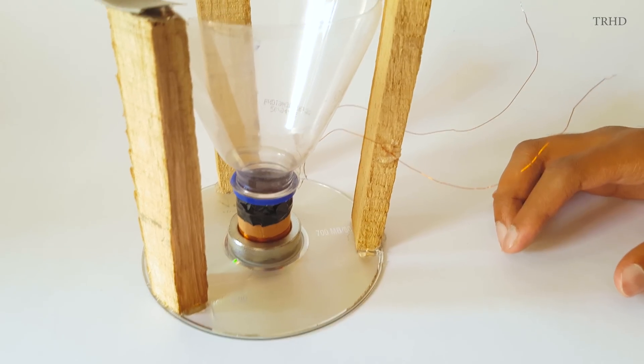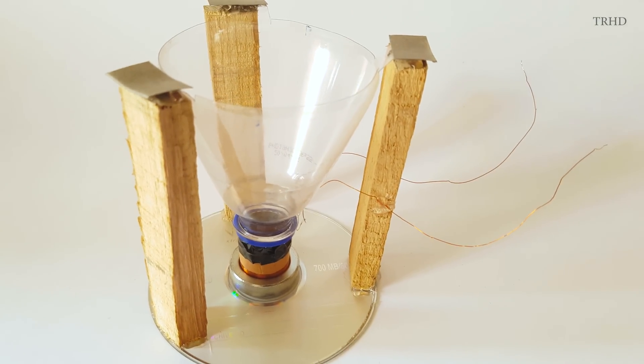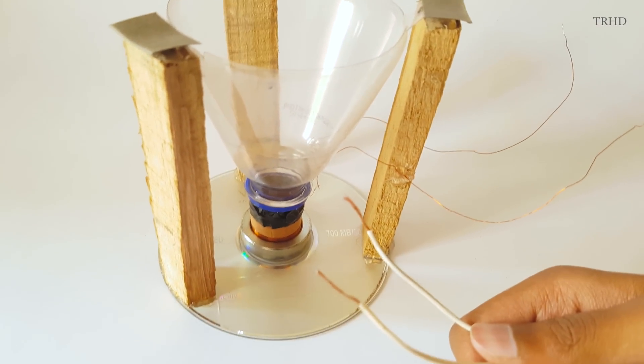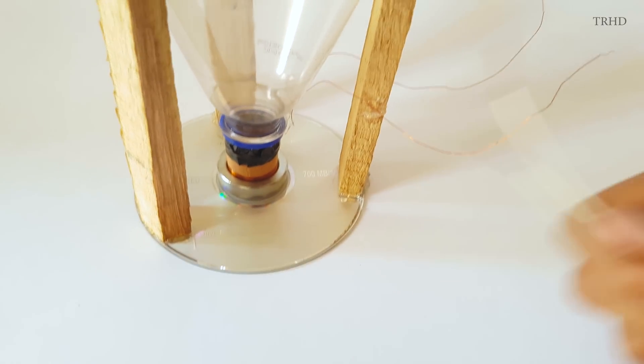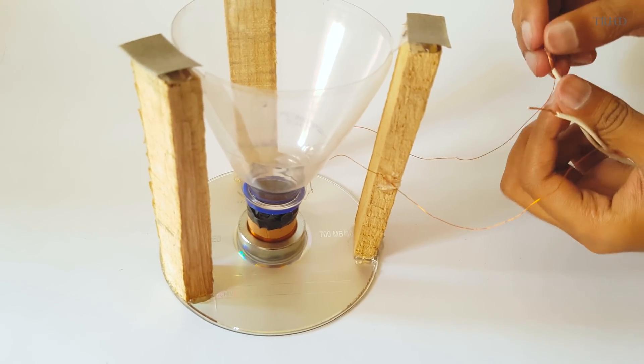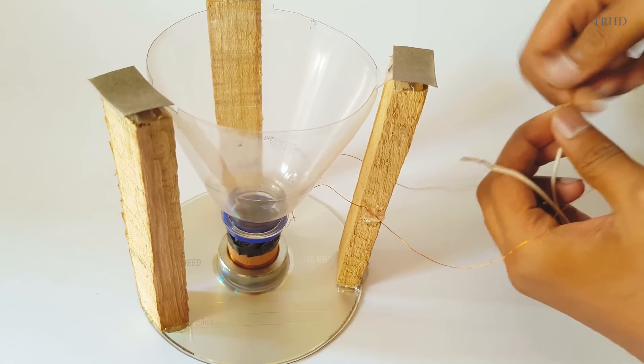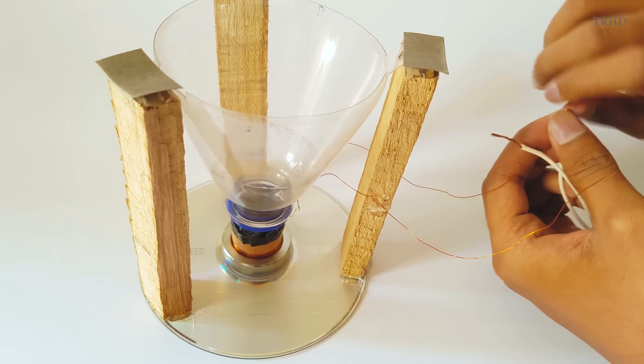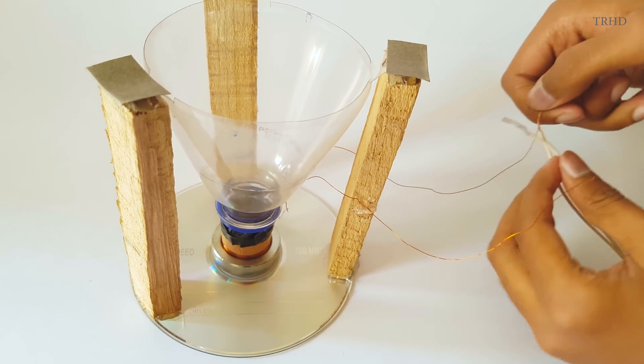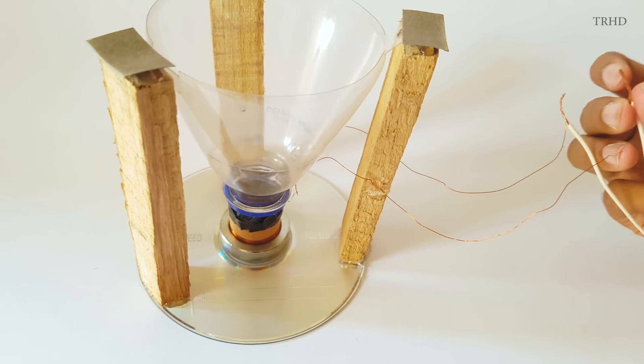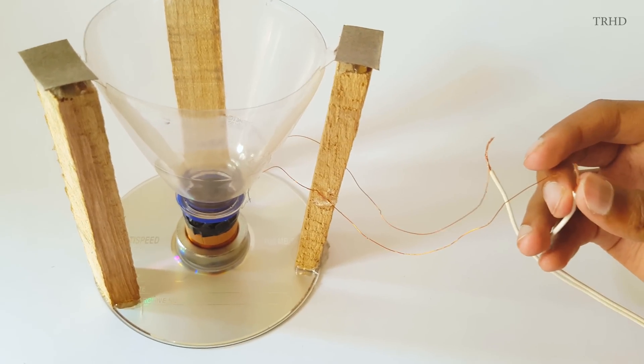So these are the voice coil leads which I'm going to connect to my 30 watt amplifier. So let's connect it using this pair of wires. Let's check out the quality of the speaker that we made just now.